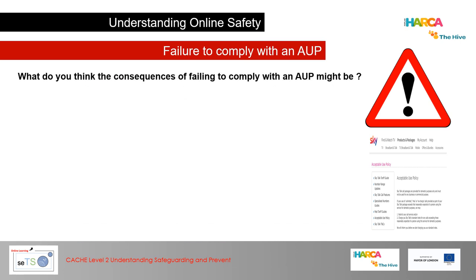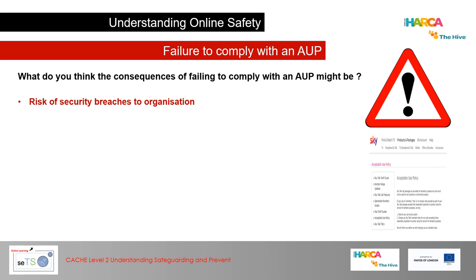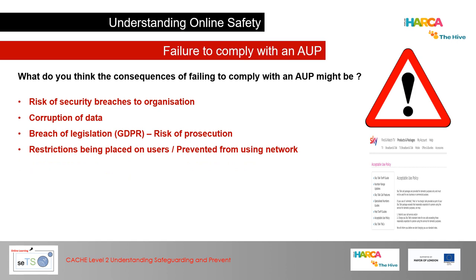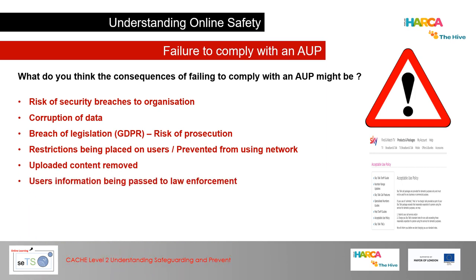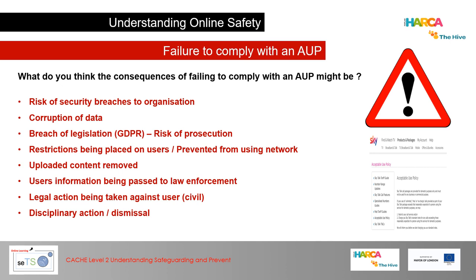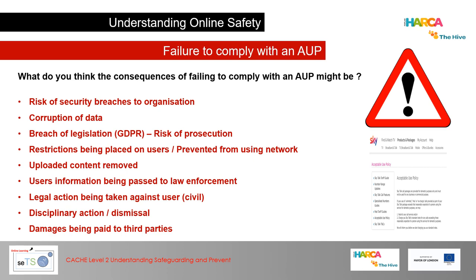What are the consequences of failing to comply with an AUP? These may include a risk of security breaches to an organisation, corruption of data, breach of legislation such as the GDPR and a risk of prosecution, restrictions being placed on users or prevention from using the network, uploaded content being removed, users' information being passed to law enforcement, legal action being taken against the user, disciplinary action or dismissal from an employer, and damages being paid to third parties.